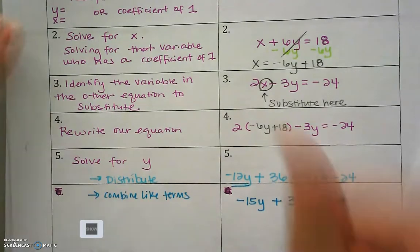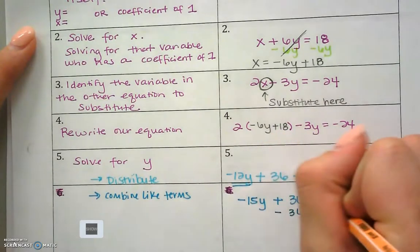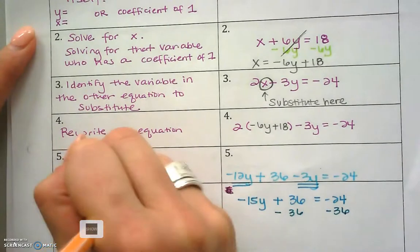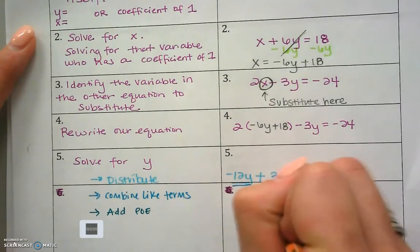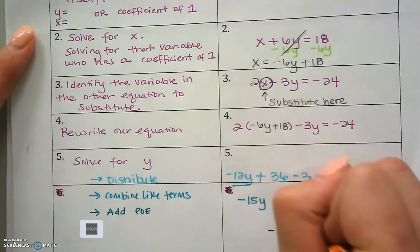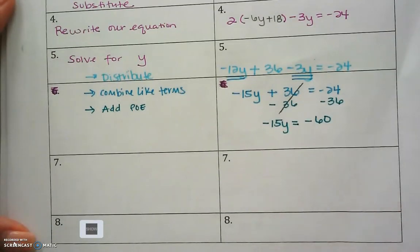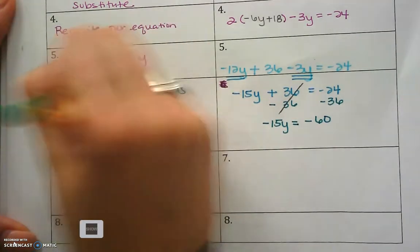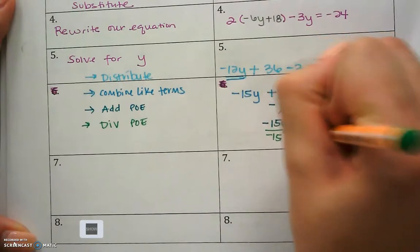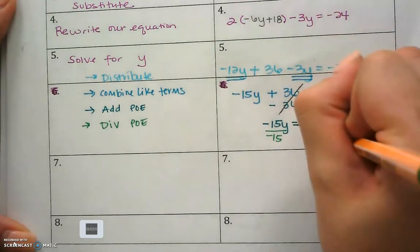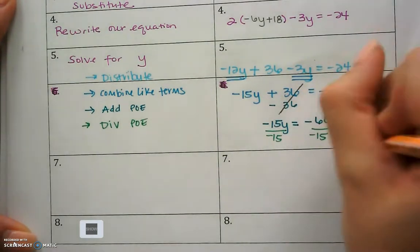I'm trying to solve for y, so I'm going to subtract 36 from both sides using the additive property of equality. That cancels the constant, giving me negative 15y equals negative 60. Our last step is to divide by negative 15. A negative divided by a negative gives me y equals positive 4.